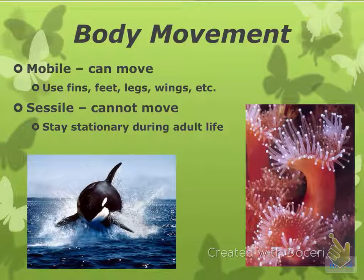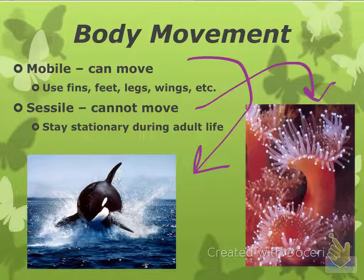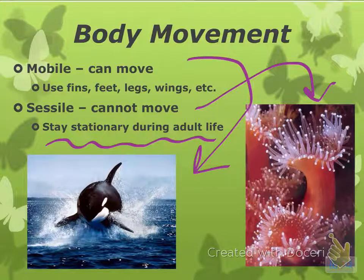So there are two types of body movement as well. Something can be mobile — fins, feet, legs, wings, like a whale. Or it can be sessile, which means it cannot move, like the sea anemone, sponges, or coral. Notice that it says they stay stationary during adult life — to be an animal, they have to be able to move at some point in their life; they just don't move as adults.